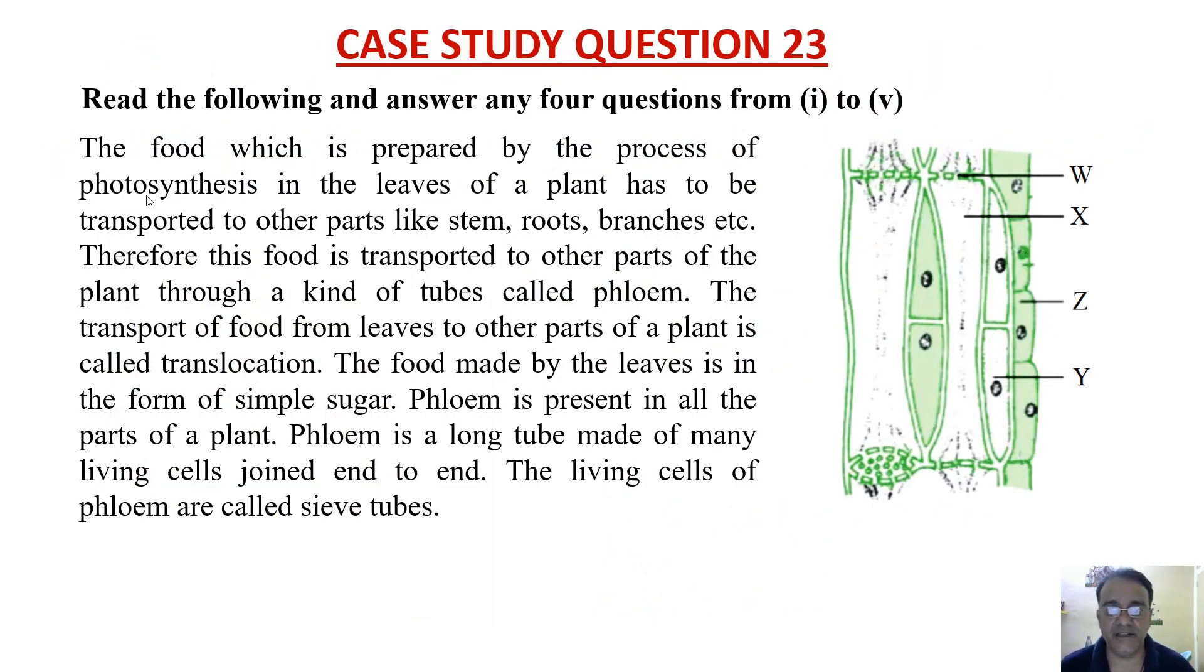The food which is prepared by the process of photosynthesis in the leaves of a plant has to be transported to other parts like stem, roots, branches etc. Therefore, this food is transported to other parts of the plant through a kind of tubes called phloem.